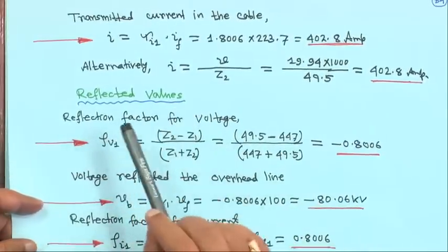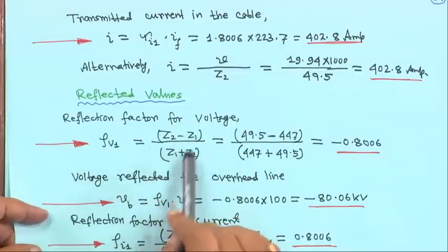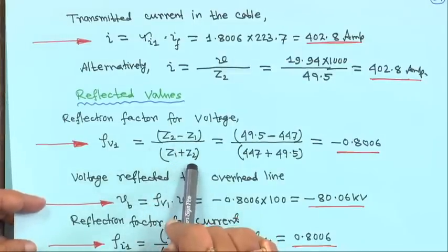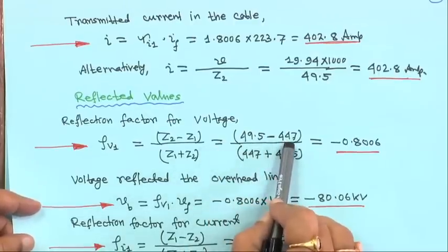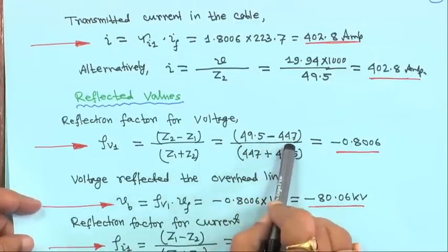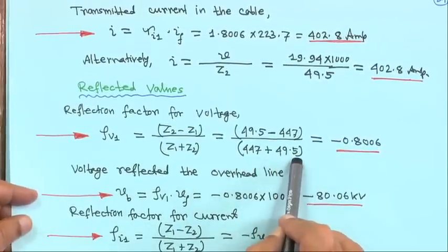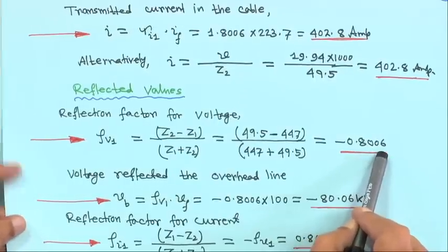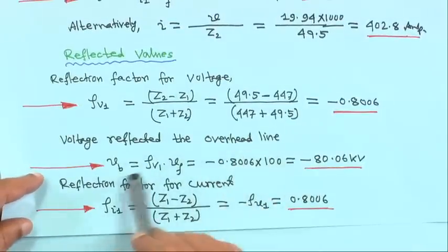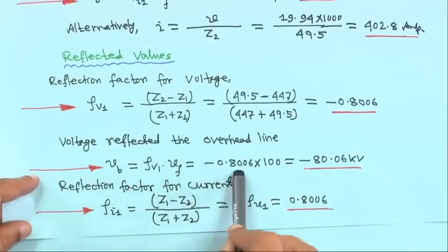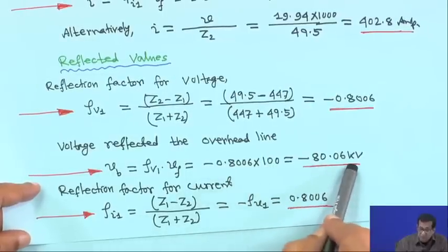For reflected values, the reflection factor for voltage is rho_V1 equals (Z2 − Z1) upon (Z1 + Z2). With Z2 equal to 49.5 and Z1 equal to 447, that gives (49.5 − 447) divided by (447 + 49.5), which equals minus 0.8006. Therefore, voltage reflected in the overhead line, Vb, equals rho_V1 × Vf, which is −0.8006×100 kV, giving −80.06 kV.